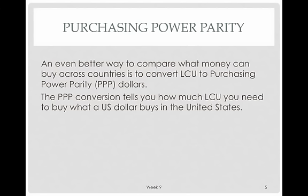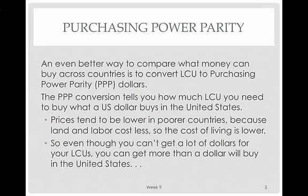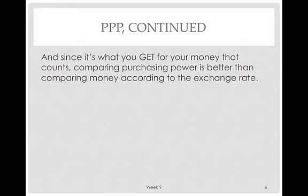The PPP conversion tells you how many local currency units you need to buy what a US dollar buys in the United States. Prices tend to be lower in poorer countries because land and labor cost less, so the cost of living is lower. That means your local currency will go farther when you use it at home than when you try to buy dollars to spend in the United States. Even though you can't get many dollars for your local currency, your currency can buy more than a dollar would buy in the US. Since it's what you get for your money that counts, comparing purchasing power is better than comparing money according to the exchange rate.